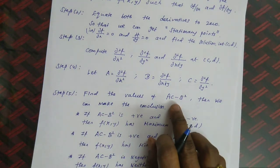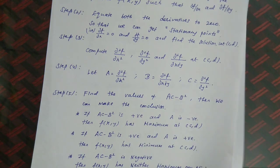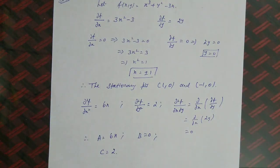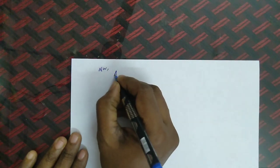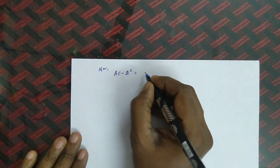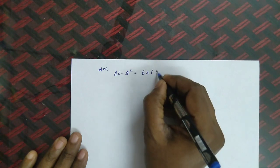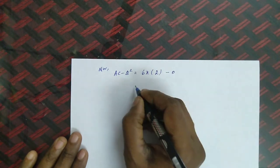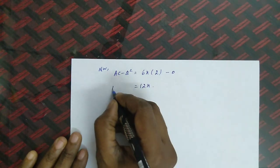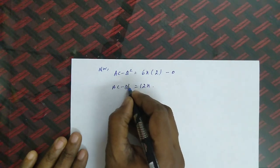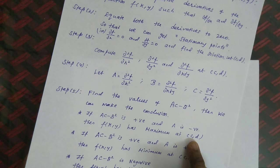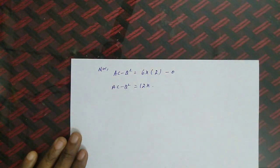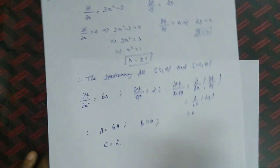Now find AC − B² at the stationary points. AC − B² = (6x)(2) − (0)² = 12x. At the first stationary point (1, 0): AC − B² = 12 × 1 = 12, which is positive.